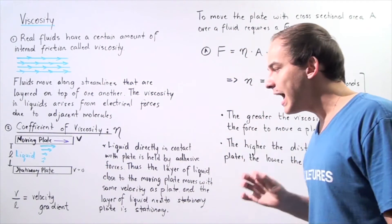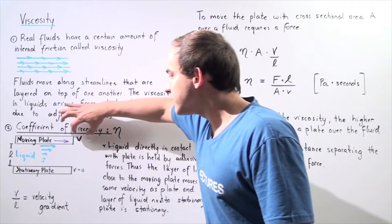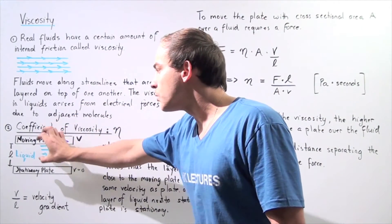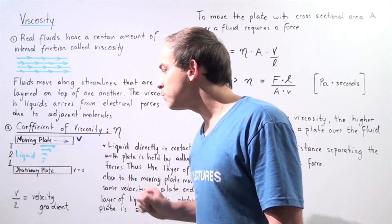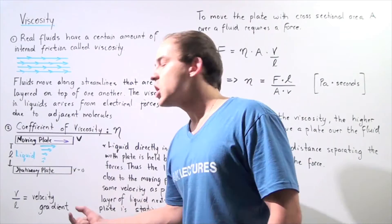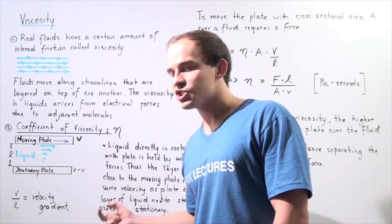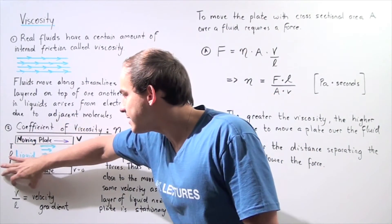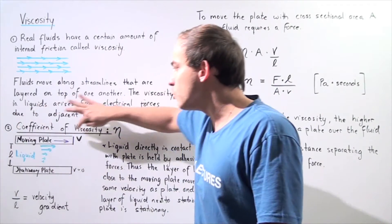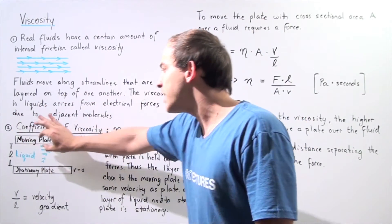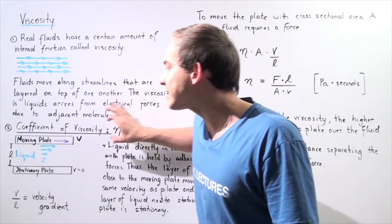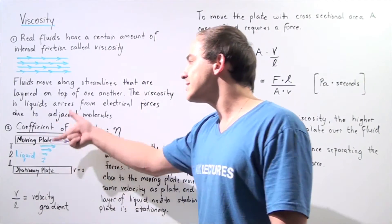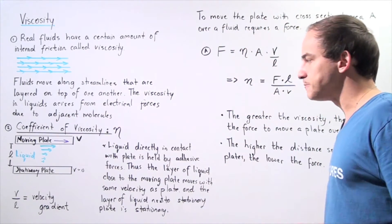The velocity of the liquid between these two plates ranges from a value of zero to a value of v. We define the ratio of this velocity v with the distance separating our two plates as the velocity gradient — that is, the velocity of the moving plate divided by the distance separating the two plates.